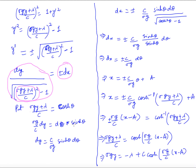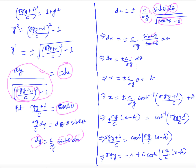With the substitution cosh(θ), differentiating gives sigma·g·dy/c = sinh(θ)·dθ, since the derivative of cosh is sinh. Replacing dy and simplifying the denominator — noting cosh²(θ) − 1 = sinh²(θ) — the sinh terms cancel, yielding dx = ±(c/(sigma·g))·dθ. Integrating gives x = ±(c/(sigma·g))·θ + A.